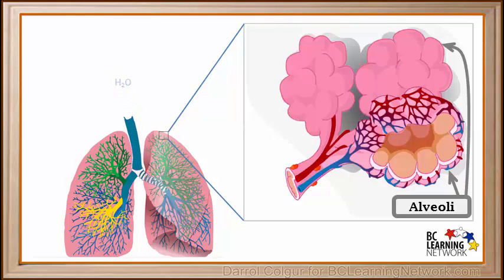When the air is very cold, the water vapor we breathe out condenses into tiny droplets, which we see as fog. This is why people say we can see our breath when it's really cold out.